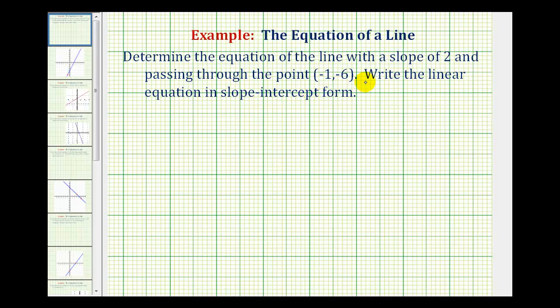We want to determine the equation of a line with a slope of two and passing through the point with coordinates negative one, negative six. We want to write the linear equation in slope-intercept form.